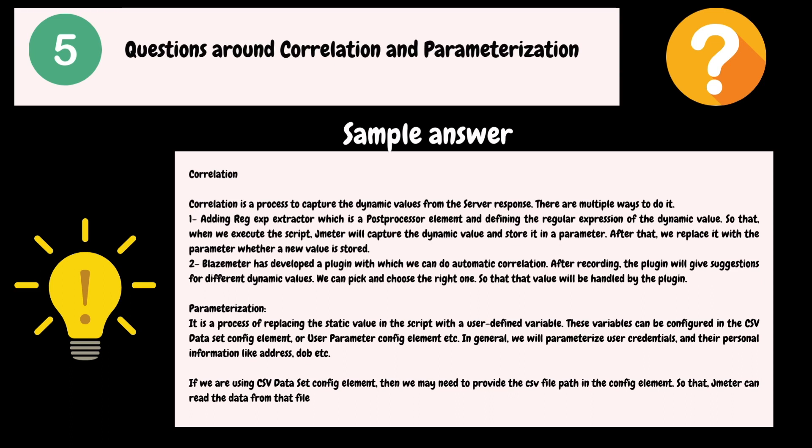The second approach is that BlazeMeter has developed a plugin with which we can do automatic correlation. After recording, the plugin will give some suggestions for different dynamic values, and we can pick and choose the right one. Regarding parameterization, it is a process of replacing static values in the script with user-defined variables. These variables can be configured in the CSV Dataset Config element or User Parameter Config element. In general, we parameterize user credentials and personal information like address, date of birth, etc. If using CSV Dataset Config, we provide the CSV file path so that JMeter can read the data from that file.